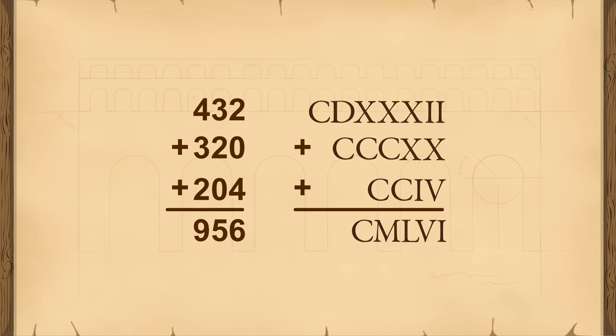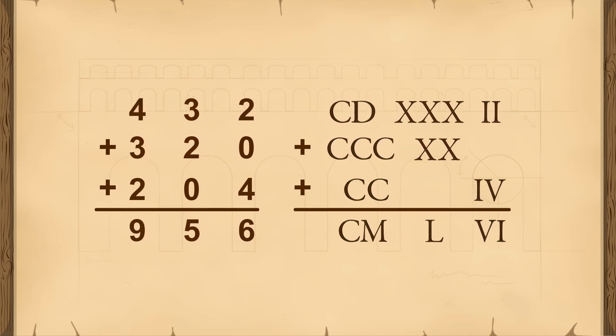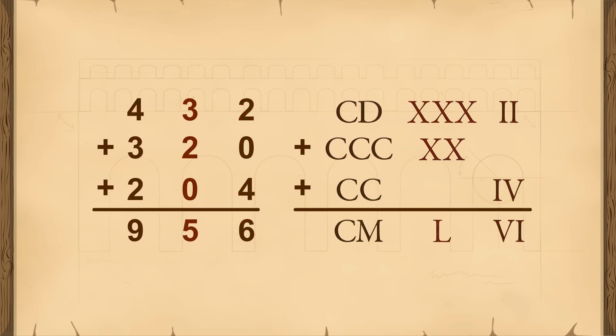However, the Roman number system is actually not all that different from ours if you think of groups of Roman symbols being the equivalent to our single numeric symbols. If we arrange the symbols into columns of 1s, 10s, and 100s, the two number systems look a little more similar.